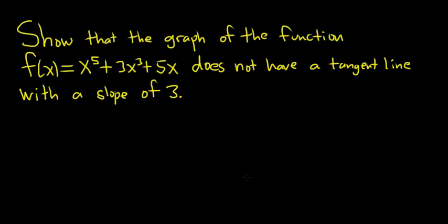Hey everyone. In this problem we're going to show that the graph of the function f of x equals x to the fifth plus 3x cubed plus 5x does not have a tangent line with a slope of 3. So let's go ahead and work it out.